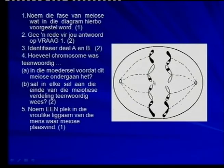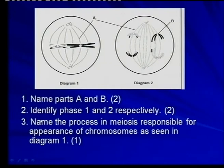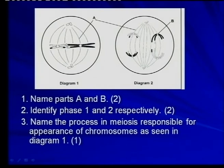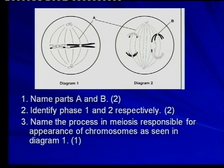Let's move on. This was also in last year's exam paper - there are centromeres shown. These two phases do not necessarily follow on one another. If you look at diagram one, it is a representation of meiosis two - metaphase two - and diagram two shows anaphase one, because you can see all chromosomes. So diagram two is meiosis one and diagram one is meiosis two. You have to pay attention to detail.